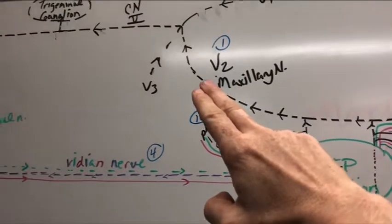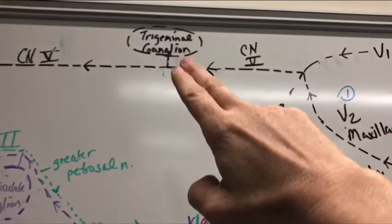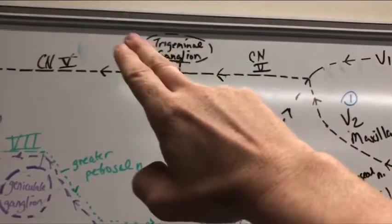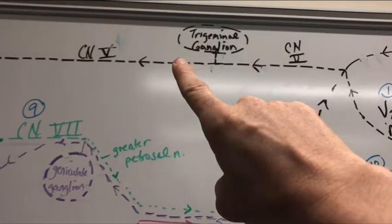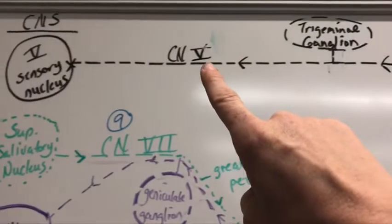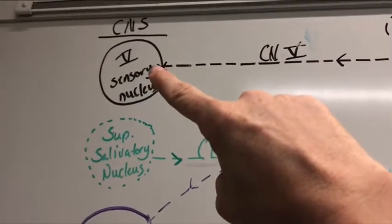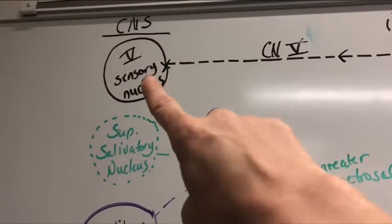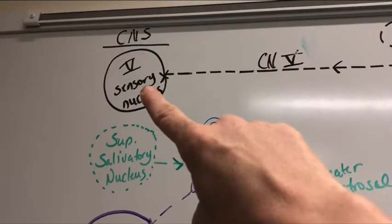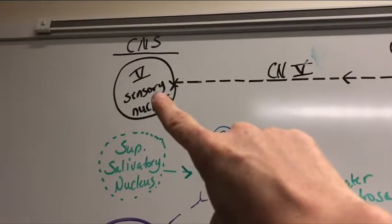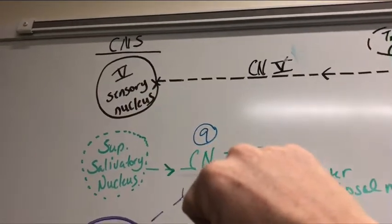We find the trigeminal nerve and the trigeminal ganglion. The trigeminal ganglion is not a synapse - notice it's a dotted line. We come through Meckel's cave into the CNS, into the trigeminal sensory nucleus, where we now see a solid line because we have synapsed - this is our second-order neuron. If the sensation is deemed worthy, we take it up to the thalamus for a third-order neuron and a second synapse, and if deemed worthy past the thalamus, up to the postcentral gyrus.